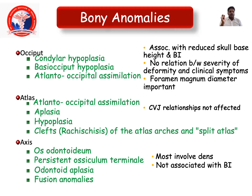Atlas anomalies include atlanto-occipital assimilation, aplasia and hyperplasia of the atlas, clefts or rachischisis of the atlas arches, and split axis. CVJ relationships are not affected in these cases. For the axis, os odontoideum, persistent os priminale, odontoid aplasia, and fusion abnormalities mostly involve the dens and are not associated with bony abnormalities.